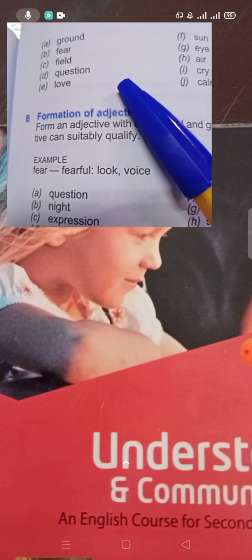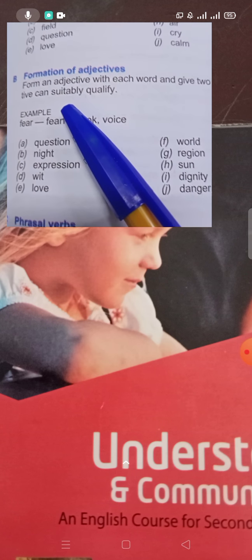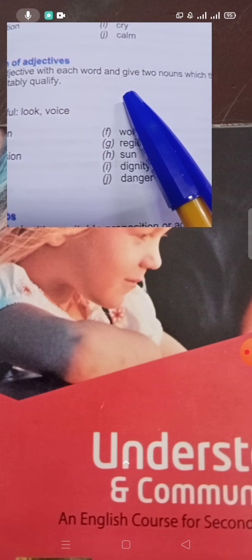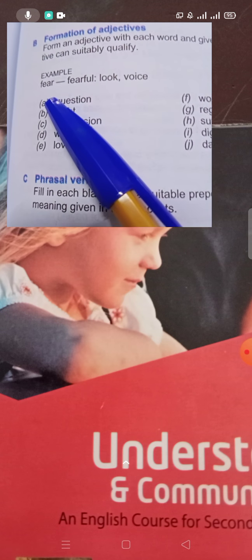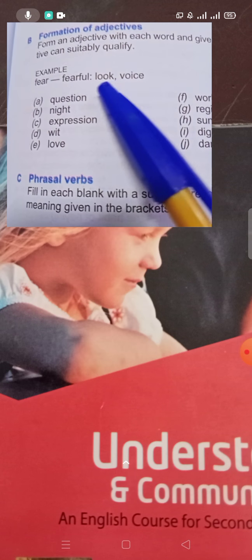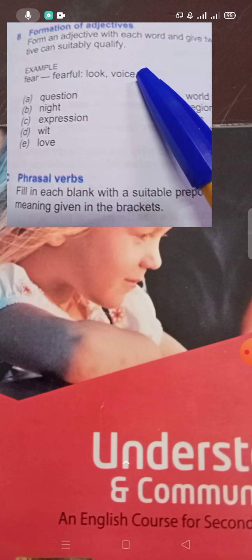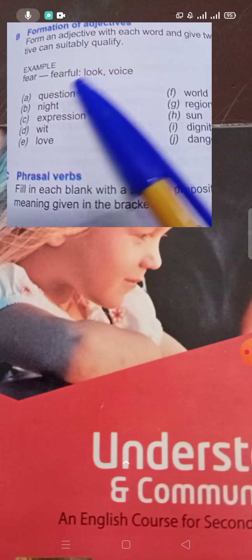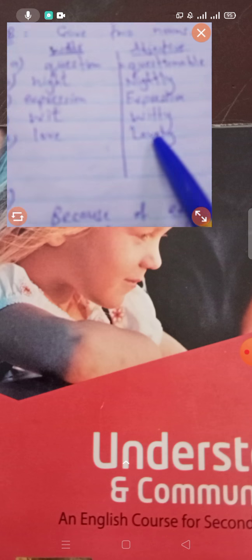You have to use further words as verbs in your sentences — I will also help you, but you have to try first. Then, formation of adjectives: form an adjective with each word and give two nouns that the adjective can suitably qualify. First make an adjective, then use two nouns with it. For example, 'fear' — adjective is 'fearful'; 'fearful look' or 'fearful voice'.